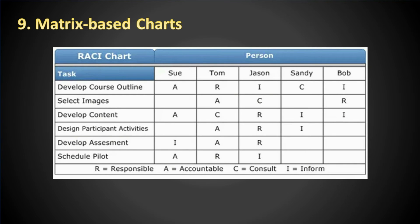A RAM is a matrix-based chart used to illustrate the connections between the work that needs to be done and project team members. A RAM can be developed at varying levels of detail, commonly at the activity or deliverable level. Typically, deliverables or activities are listed in the left-hand column with team member names across the top, aiding communication and helping expose any gaps that may exist.